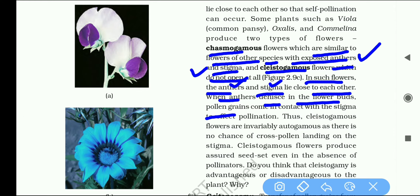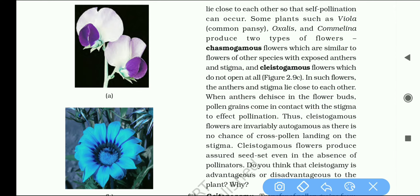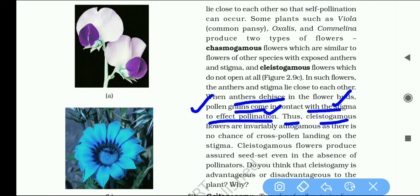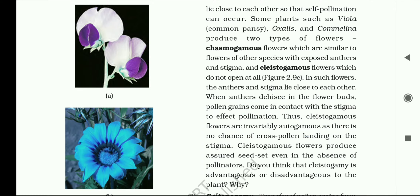When pollen grains come in contact with the stigma, pollination is effected. Thus, cleistogamous flowers are invariably autogamous as there is no chance of cross-pollination.